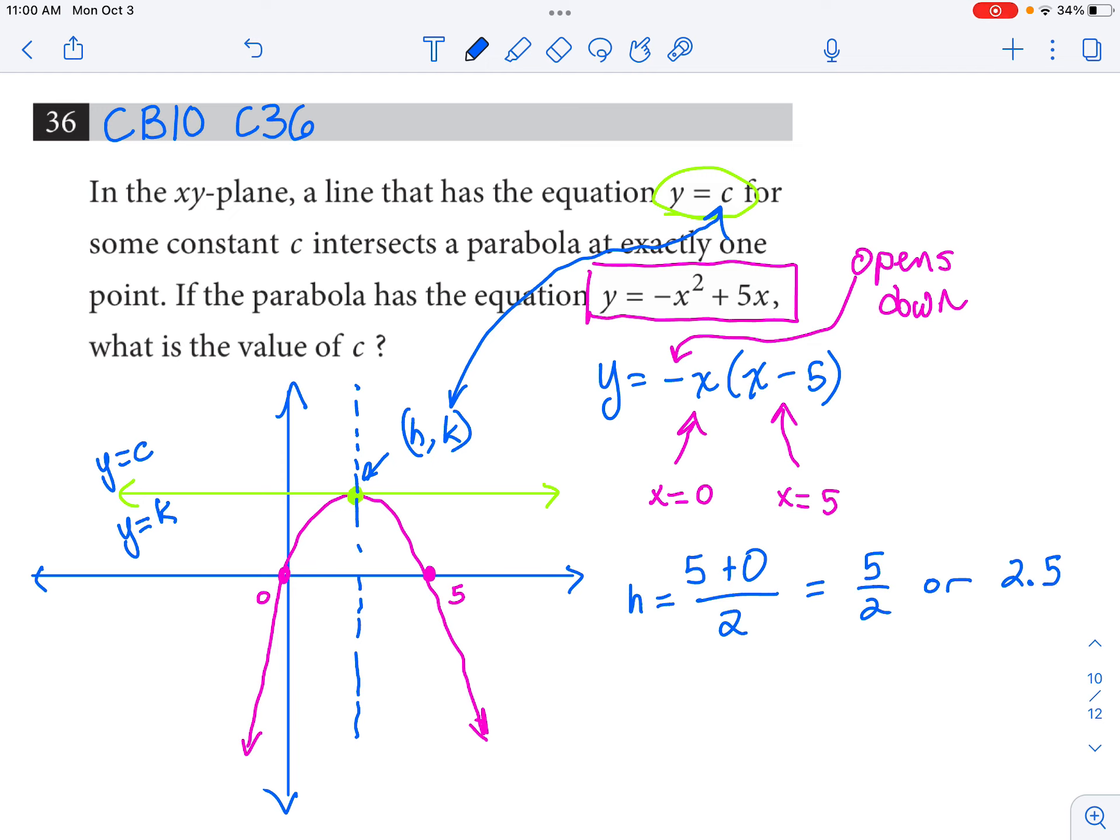Now don't write that as your final answer. That's the x value of that vertex. We need the k value, or in this problem they're calling it c, but in your math class you would have used the letter k, not that it really matters. It's the y value though. If the x value is 2.5, what is the associated y value?